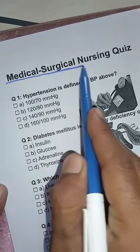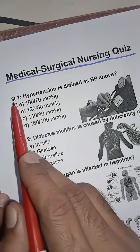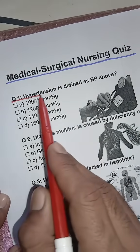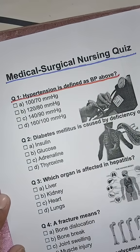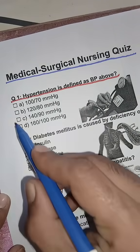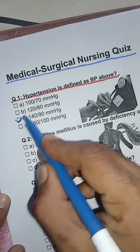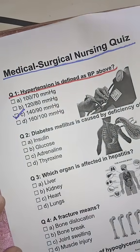Medical Surgical Nursing Quiz, Question 1. Hypertension is defined as BP above? Answer: C. 140 over 90 millimeters of mercury.